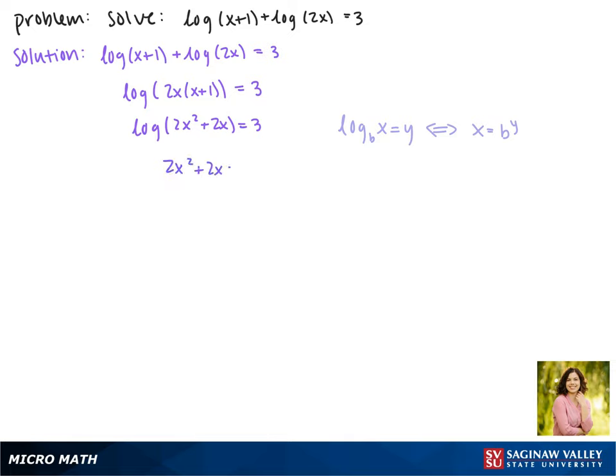We'll rewrite our equation as 2x² + 2x = 10³. 10 to the third power is 1,000, so this gives us 2x² + 2x = 1,000. In order to solve this we'll need to move everything to the same side. This gives us 2x² + 2x - 1,000 = 0.